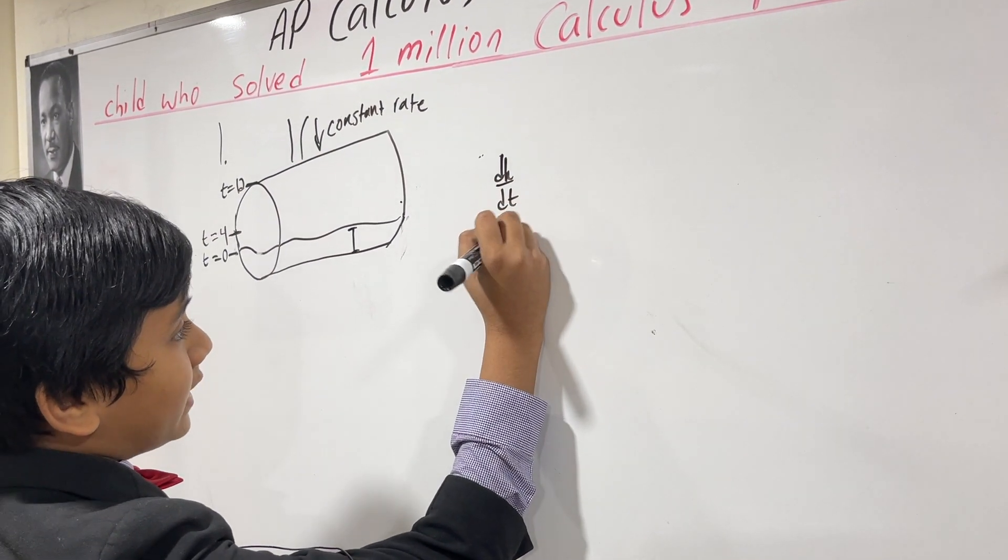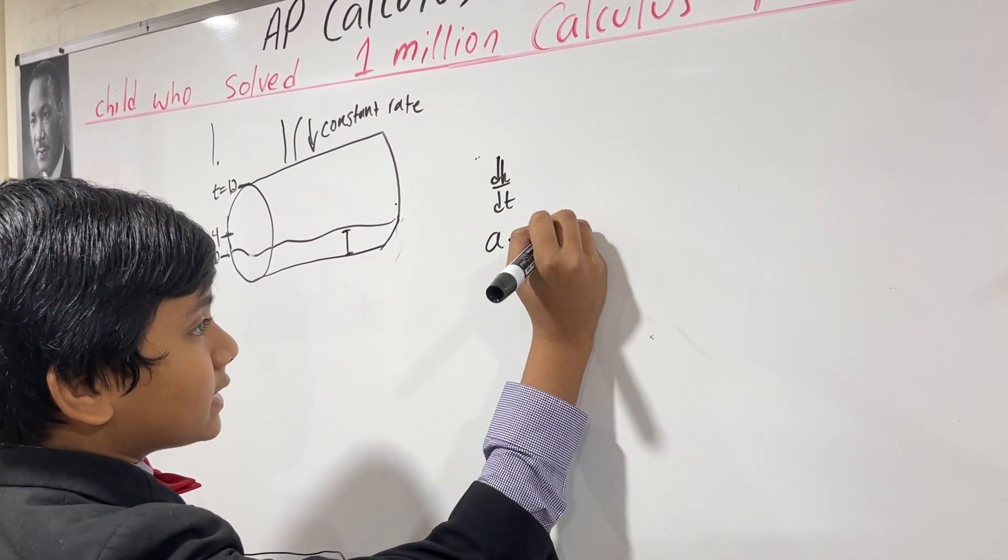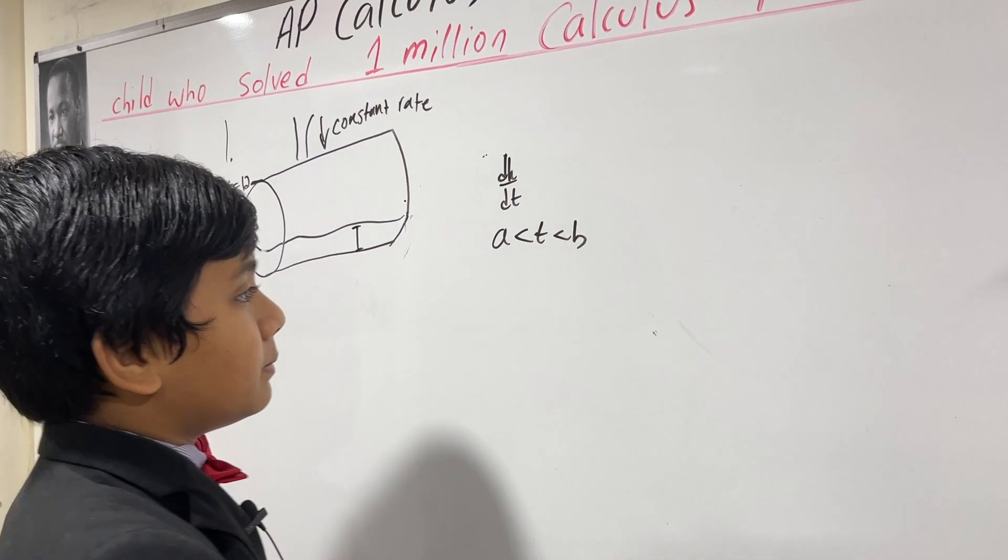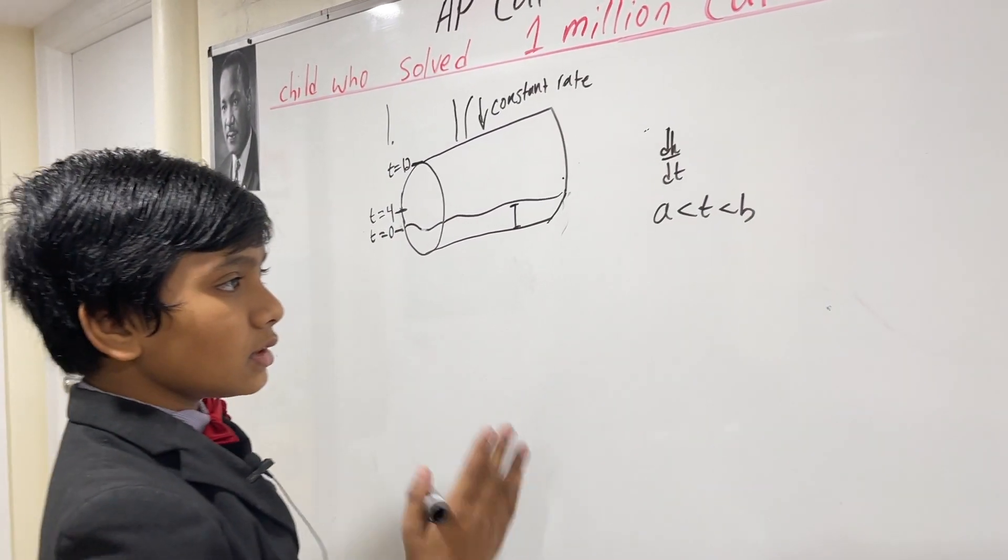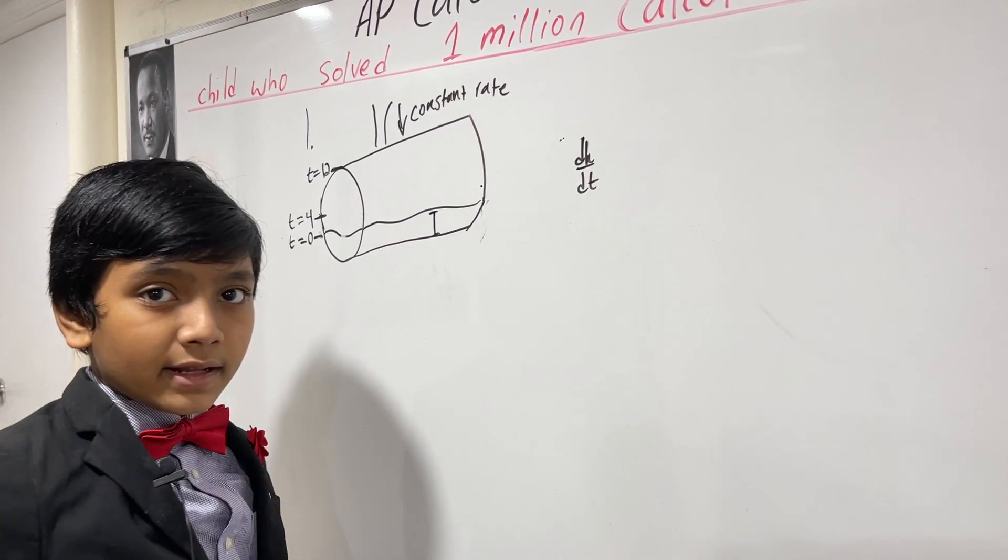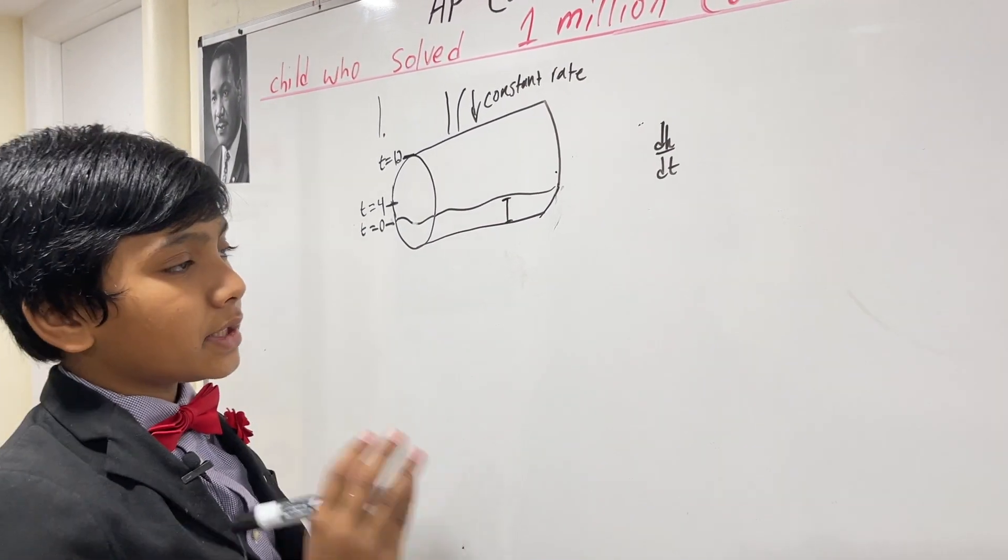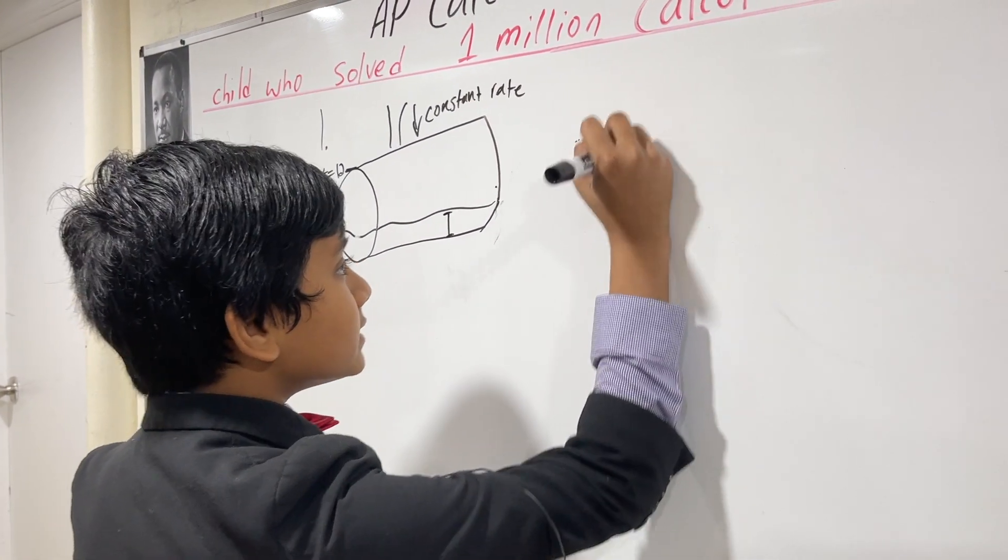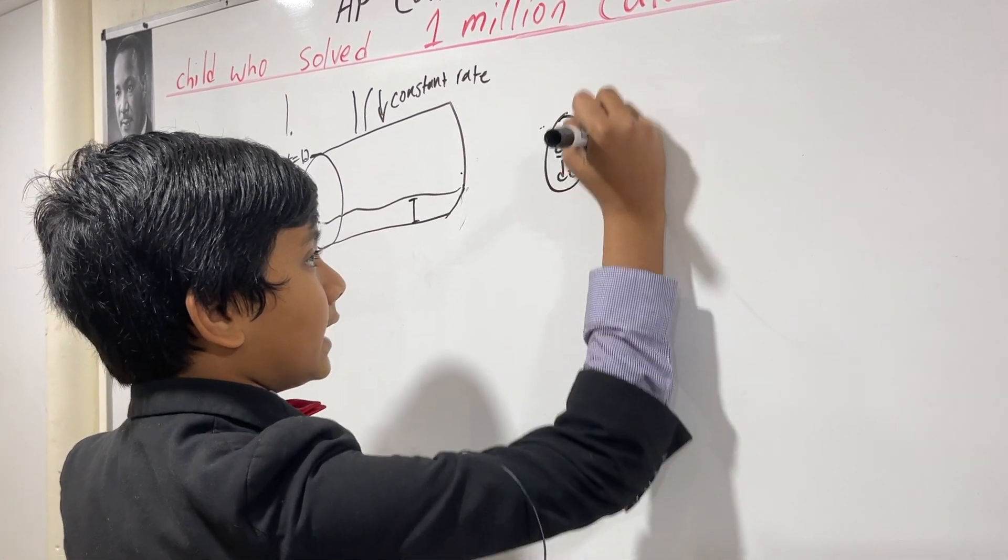Basically, they're asking: if a is less than t which is less than b... To phrase it another way, what is the time interval over which dh/dt is increasing?